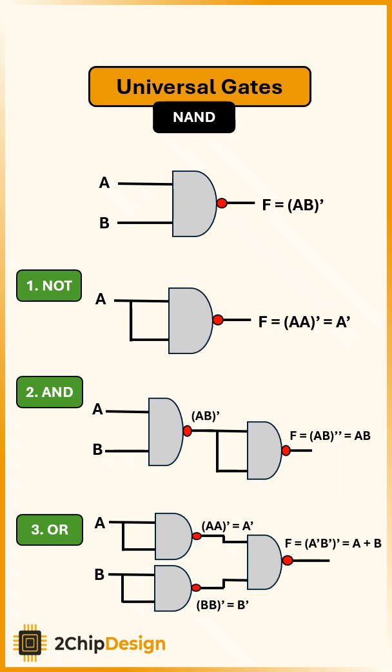And that's why the NAND is called a universal gate, because with just NAND gates, we can build NOT, AND, and OR.